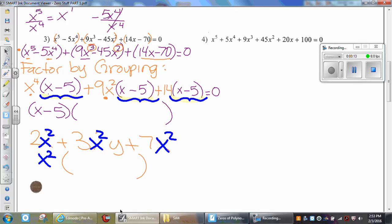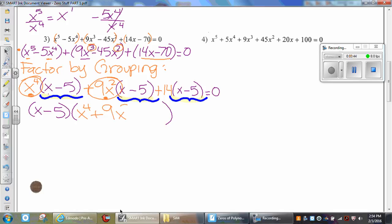Going back to our example, if I factor out x minus 5 from here, I will get x to the fourth. Next group, if I factor x minus 5 from there, I will get 9x squared. And if I factor x minus 5 from the third group, I will get plus 14. And that will equal 0.